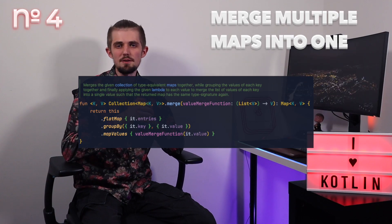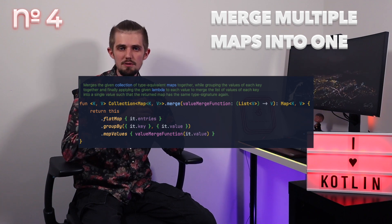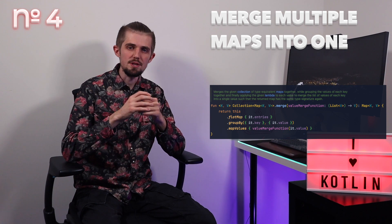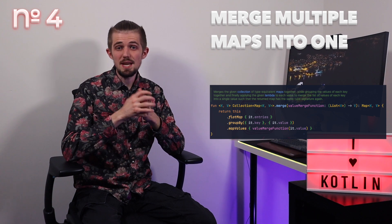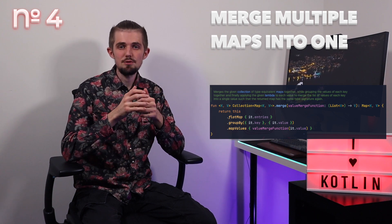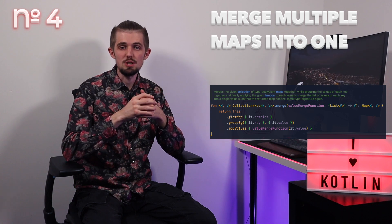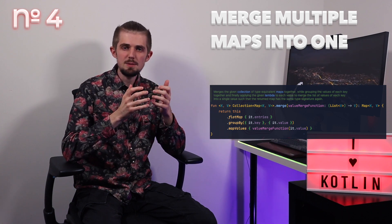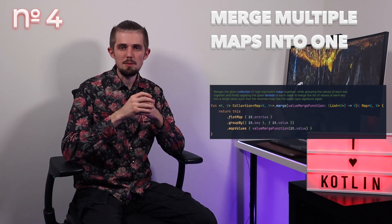This one is simply about merging a collection of maps of the same parameterized types into a single map to look up something out of it. The important thing to note is the value merge function argument that gets passed to it. The reason being that it can of course happen that the merged maps contain different values for the same key, which requires those values to be merged into a single one again. I'll explain in a moment how this one can be made a lot more useful — bear with me.